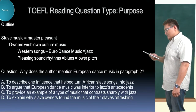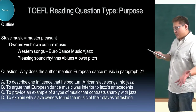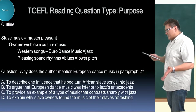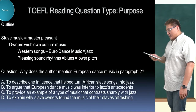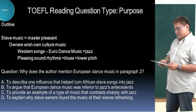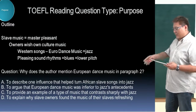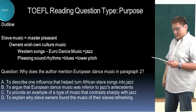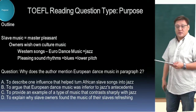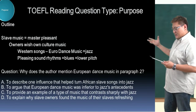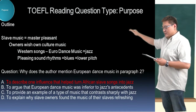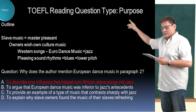The answer options are: to describe one influence that helped turn American songs into jazz; to argue that European dance music was inferior; to provide an example of a type of music that contrasted sharply with jazz; to explain why slave owners found the music of their slaves refreshing. Which one is it? Slave masters — owners wished their own culture's music. Paraphrasing that, changing the wording — what is it? It's an influence, by the slave owners. So the answer is A. To describe one influence that helped turn American slaves' songs into jazz — and your notes say: European dance → jazz, preceded by owners wishing their own culture's music, which was the influence.